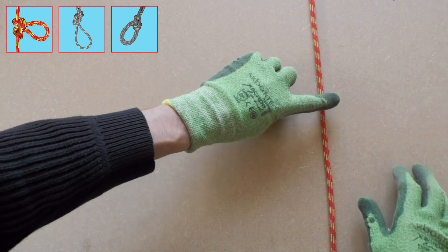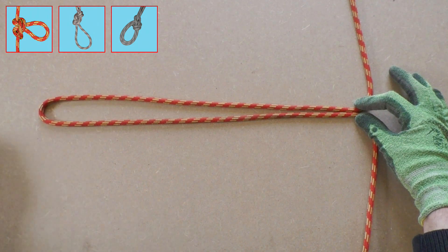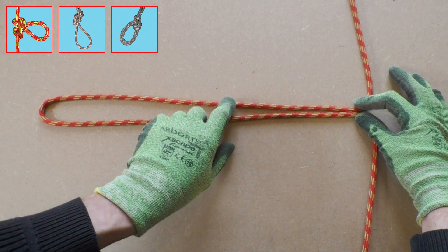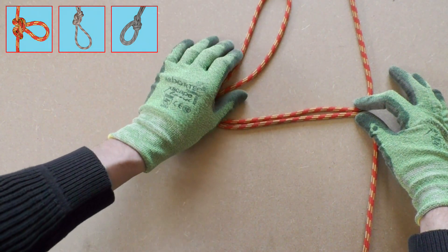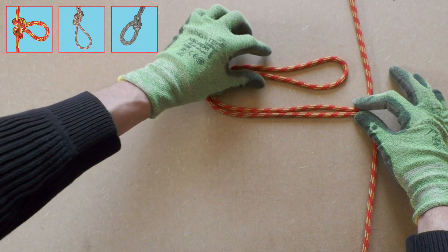The next simple way to form a loop in the middle of a rope is by using the figure 8 knot on a bite. We start by forming a bite in the rope, hence the name figure 8 on a bite. If you need a bigger loop then you need to create a bigger bite.